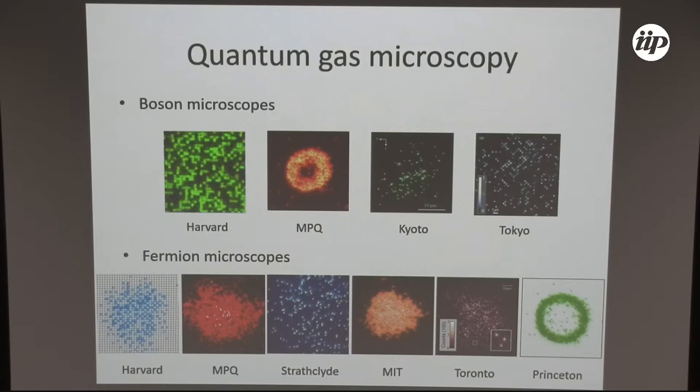Quantum gas microscopy has arrived several years ago by now. There's a lot of groups that took nice single atom pictures of atoms in optical lattices. It starts with bosons in the group of Harvard and MPQ with rubidium 87. There's also recently pictures of single atoms in erbium in optical lattices. Within a year or two, a variety of fermionic microscopes came up, and we recently added the pictures from Princeton to this series. They're all potassium or lithium.